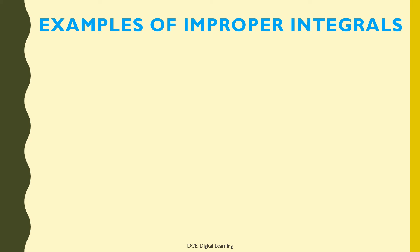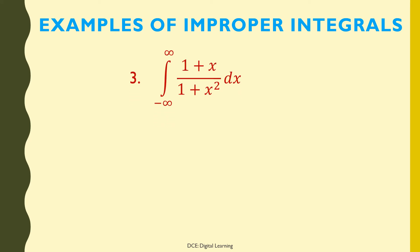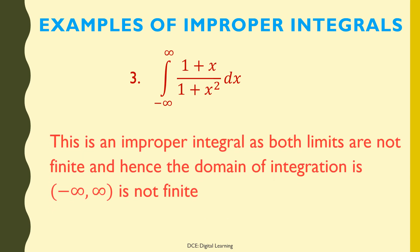Third example: ∫(1 + x)/(1 + x²) dx from −∞ to ∞ is an improper integral, as both limits are not finite and hence the domain of integration, the open interval (−∞, ∞), is not finite.